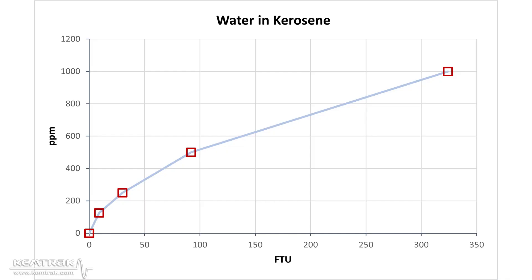This is the result of our measurements. We can see the relationship between turbidity and parts per million. Notice that the curve isn't linear. Trying to mix two substances that dislike each other is quite a challenge.